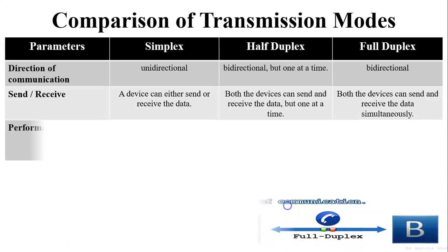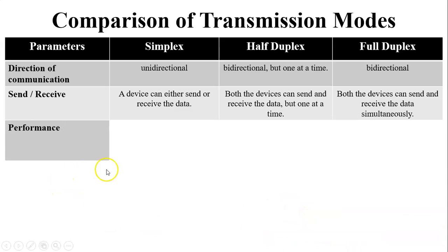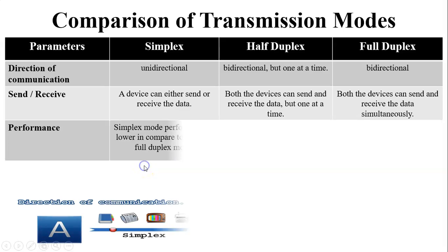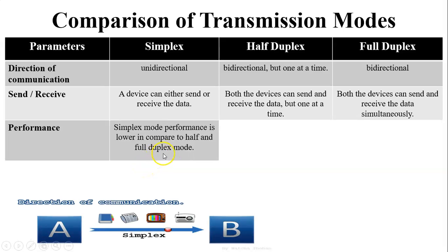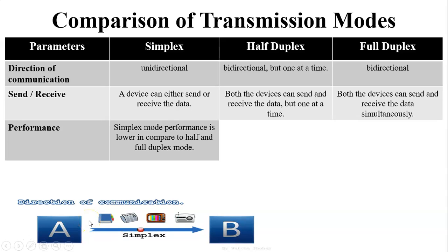The next parameter is performance. Simplex mode performance is less compared to half duplex and full duplex, because user A sends data and user B receives it, but when user B wants to send an acknowledgement back to user A, it is not possible in simplex mode — it is strictly one-way communication.